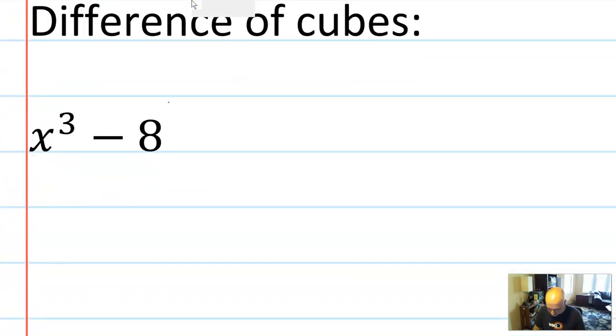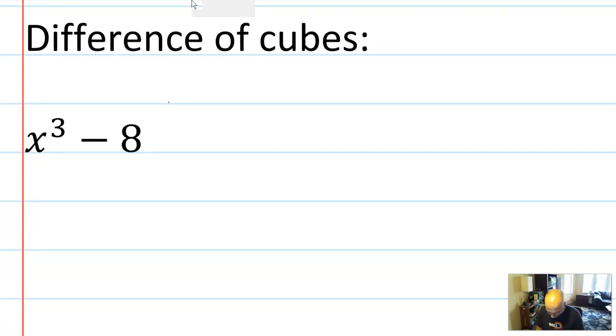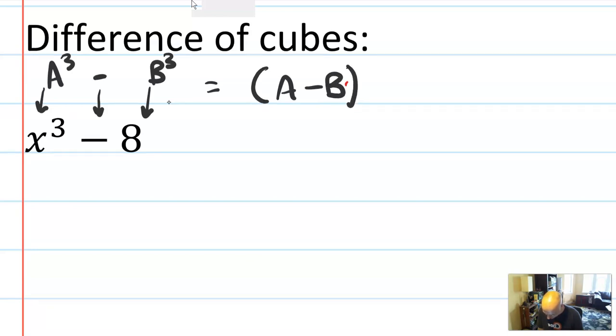Let's look at something else called a difference of cubes pattern. In a difference of cubes pattern, what you'll notice is that you have some number cubed, you have a minus sign, and you have some number cubed. So 8 is a perfect cube, it's 2 to the 3rd. And the pattern for difference of cubes goes like this: it factors into a minus b. And I'm trying to do this from memory. And then the rest of the pattern kind of turns into a perfect square, so it's going to be a trinomial. So you're going to have an a², you're going to have an ab, and you're going to have a b².